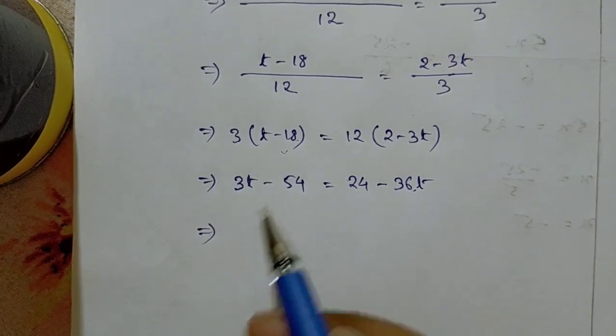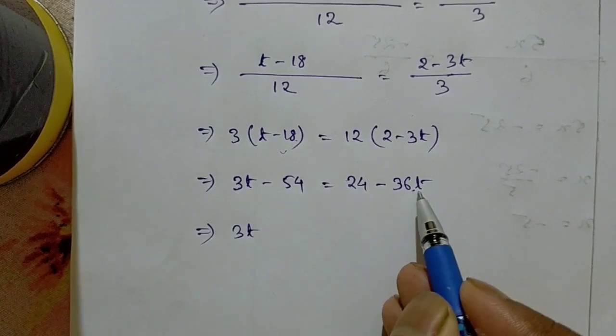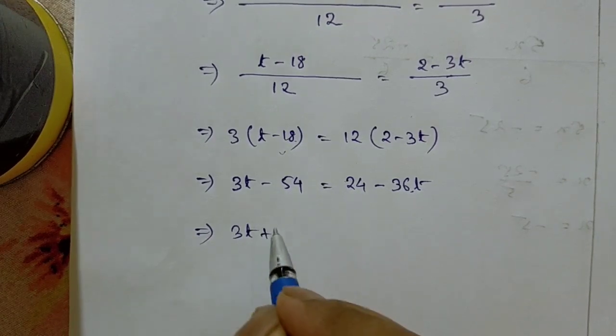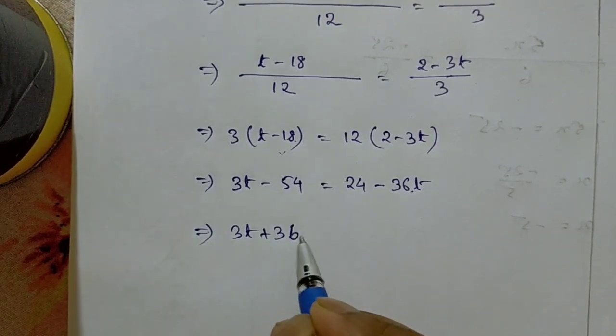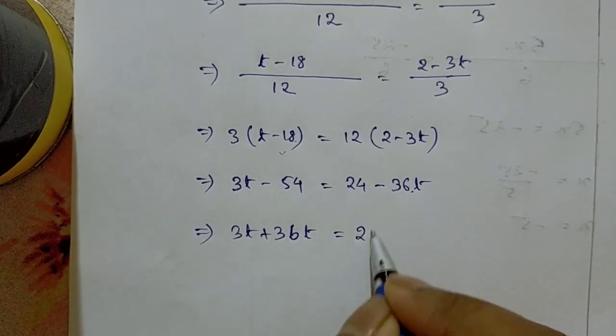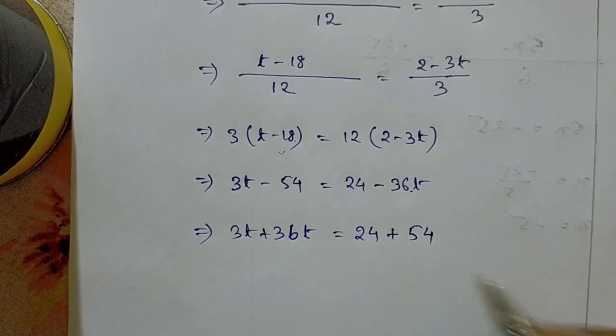So 3t minus 36t will come over here and it will become plus 36t, equal to 24 plus 54. So 3t plus 36t is 39t, equal to 24 plus 54, which is 78.